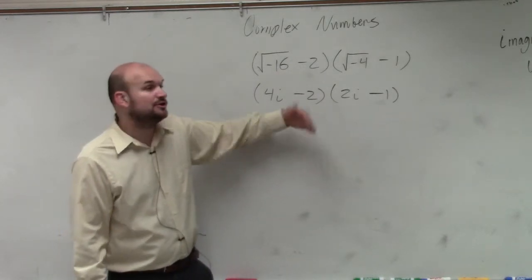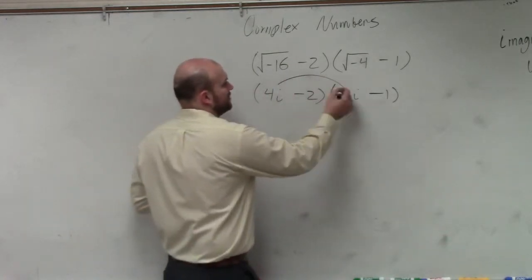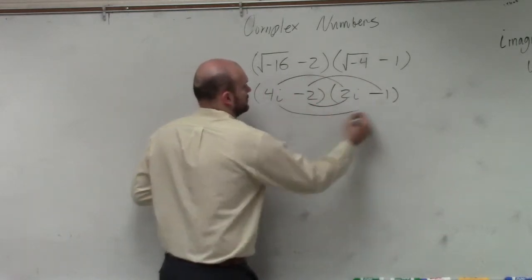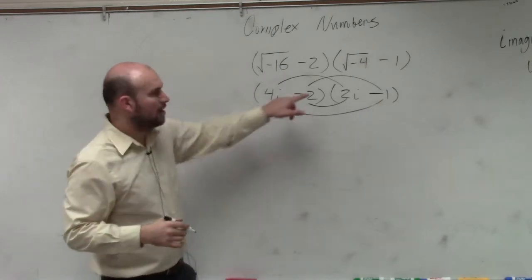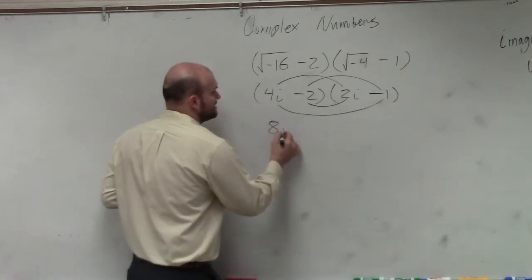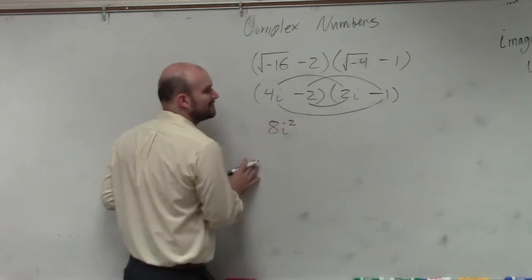OK, now you could use the box method, which I prefer, or you could just use FOIL. OK, 4i times 2i is 8i squared. Ooh, crap, I forgot to teach this first.